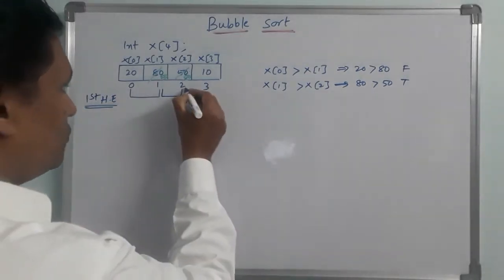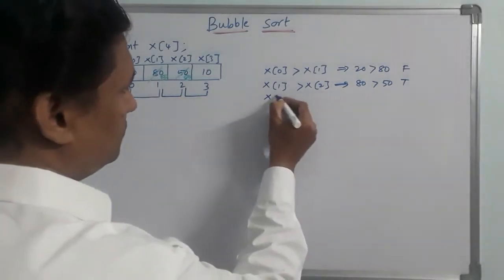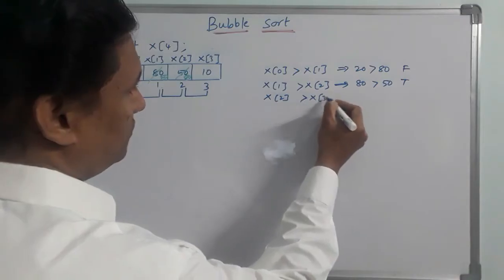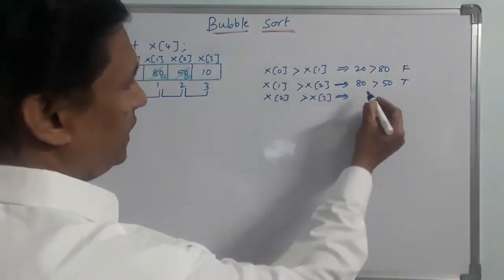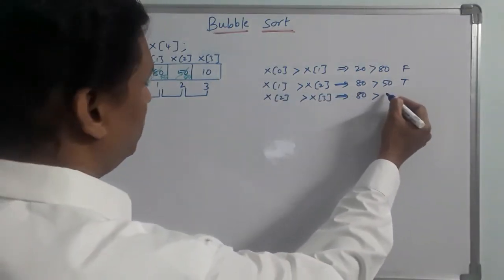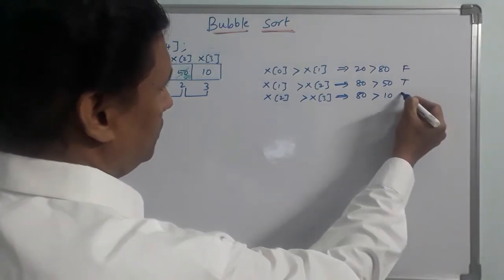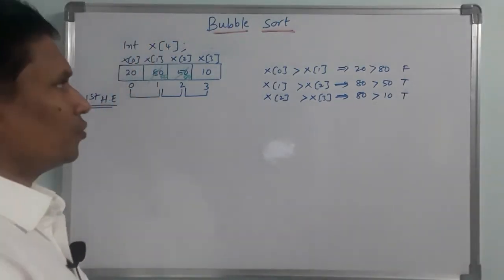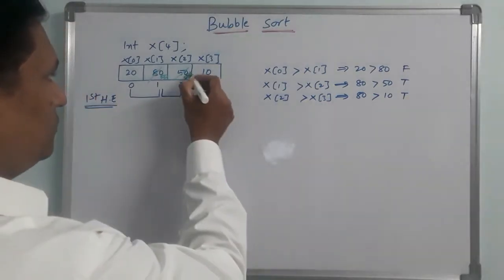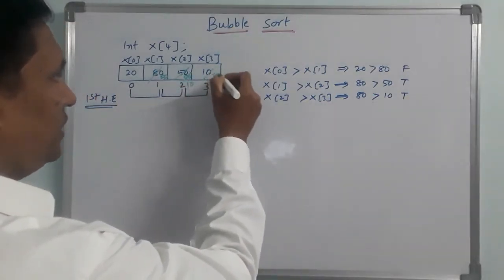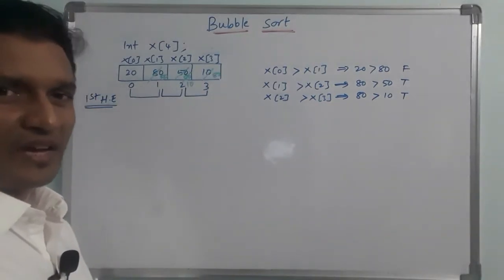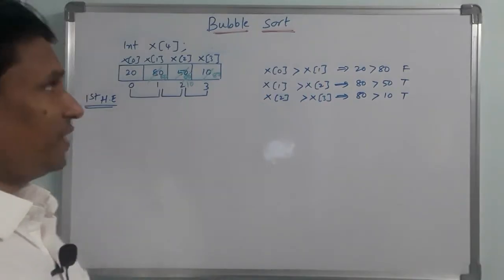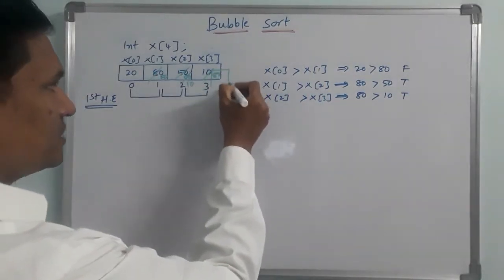Next comparison: x[2] versus x[3]. Is x[2] greater than x[3]? x[2] is now 80, and x[3] is 10. Is 80 greater than 10? Yes, this is true. So we interchange them. Finally, 80 is at the last position — the highest element is now fixed.